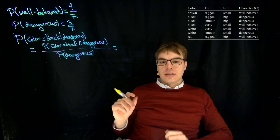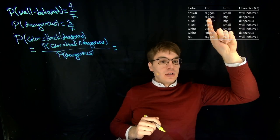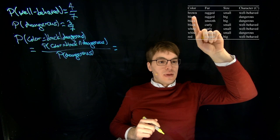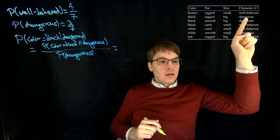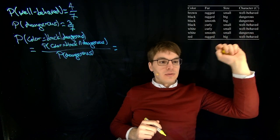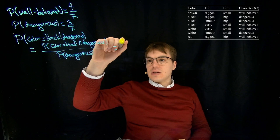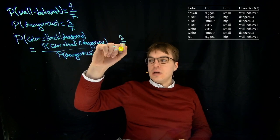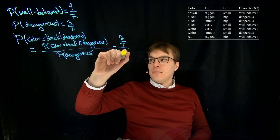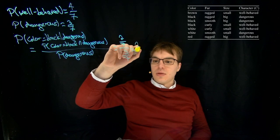Let's have a look. Color is black and dog is dangerous. So this applies to this example here, black and dangerous, and also this one, black and dangerous, but not this one, white and dangerous. So we get 2 out of 7 divided by 3 out of 7, and this is 2 thirds.